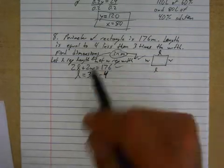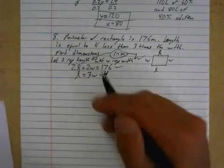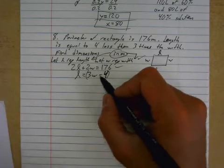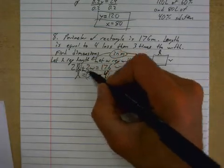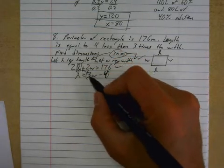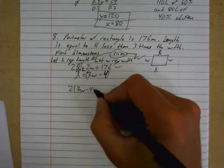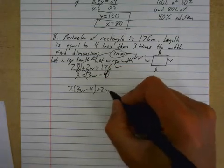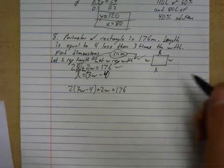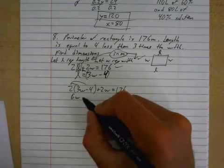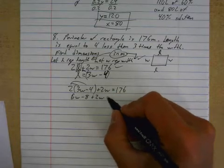Okay now, I almost always do elimination as you've seen in the last examples, but this time, this is all set up for substitution. L is equal to, I put that in a bracket, and I plug it into there because that's an L. So because L is three W minus four, I can turn this L into three W minus four, plus two W equals 176. All right, multiply that in, do some distribution...